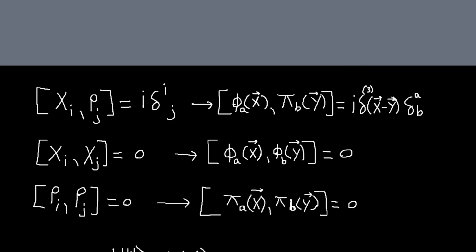So how do we do that? Basically, just like we had in ordinary quantum mechanics to quantize things, we just took our coordinates and momenta and we turned them into operators and we demanded that they satisfy commutation relations.